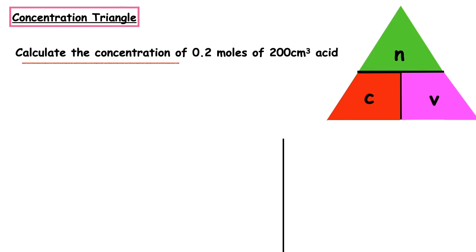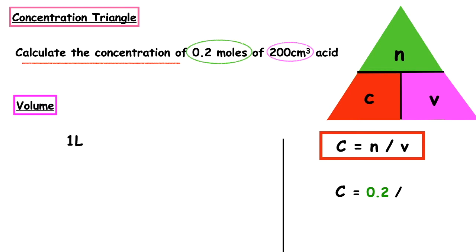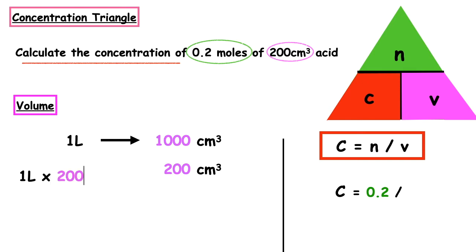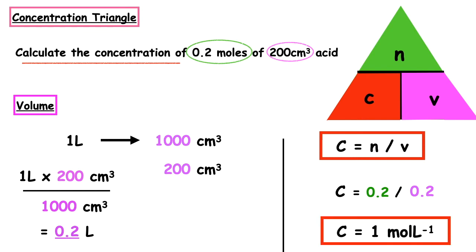This question wants us to calculate the concentration of 0.2 moles of 200 centimetres cubed of acid. C = N ÷ V. Number of moles is 0.2. Volume is 200 cm³; converting: 200 ÷ 1000 = 0.2 litres. Concentration = 0.2 ÷ 0.2 = 1 mole per litre.